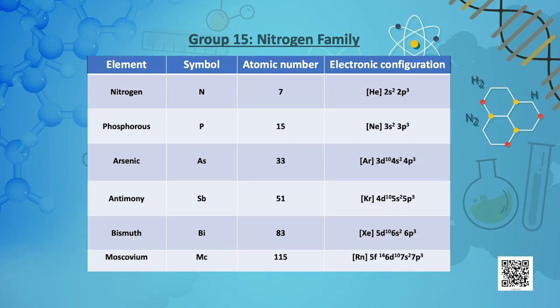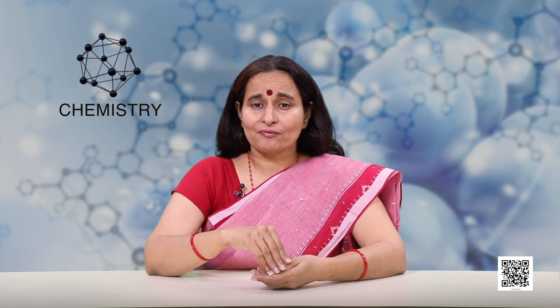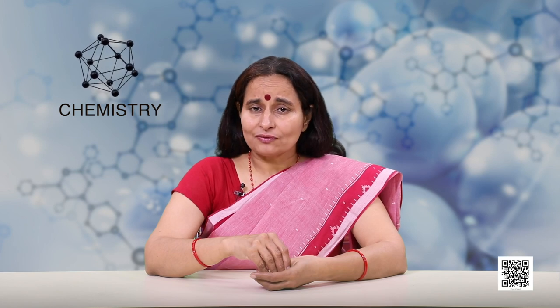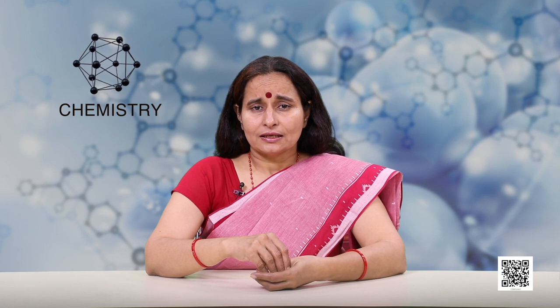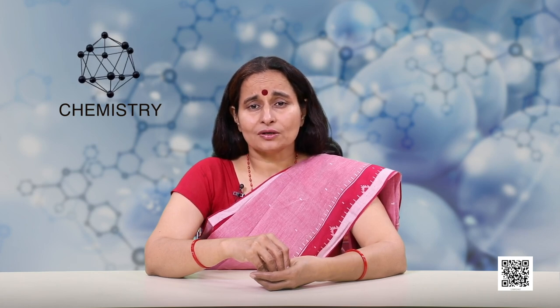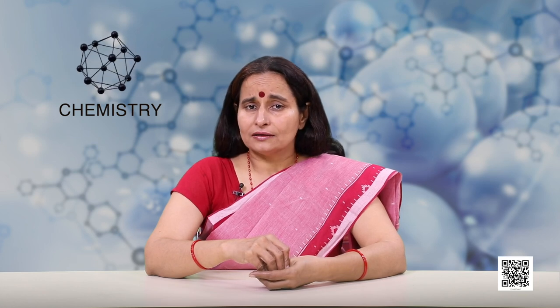Today we will discuss group 15 elements, which is called the nitrogen family. The elements present in this group are nitrogen (N), phosphorus (P), arsenic (As), antimony (Sb), bismuth (Bi), and moscovium (Mc). Moscovium, represented by the symbol Mc, has atomic number 115 and atomic mass 289. It is a synthetic radioactive element available in very little amount with a very short half-life, so its chemistry is yet to be established. Therefore, our focus will be on the first 5 elements and not on moscovium.